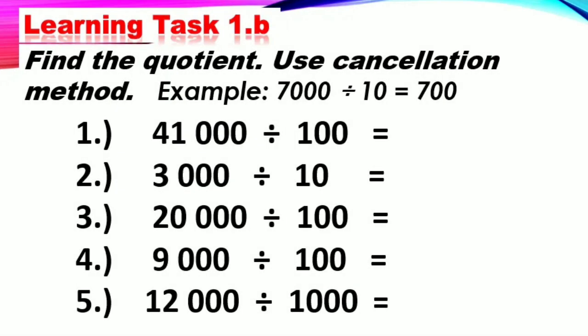This time, let's find the quotient. Use the cancellation method. Example: 7,000 divided by 10. Cancel the same number of zeros in the divisor and in the dividend. The answer is 700. Now it's your turn to answer the remaining numbers.